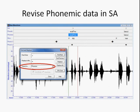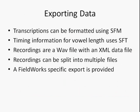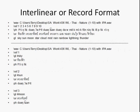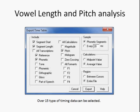That concludes the three types of data a user might work with. Once the transcribing and analysis are completed, these transcriptions can be formatted using standard format markers, or timing information for vowel length or pitch studies can be exported. The recordings are done in WAV files with an XML data file containing all transcription field data. Recordings can be split into multiple files for use in other programs such as FieldWorks. There's an example of the interlinear record created under SFM export — either an interlinear aligned set of data or record-based data for each word. There's also a dialog box that allows timing information to be exported.